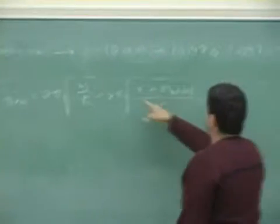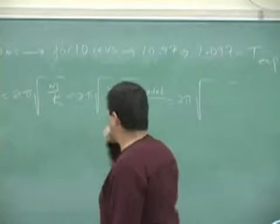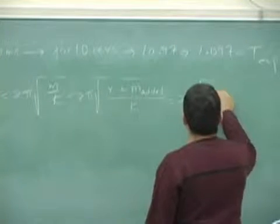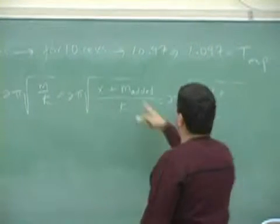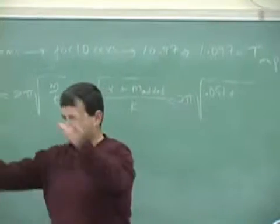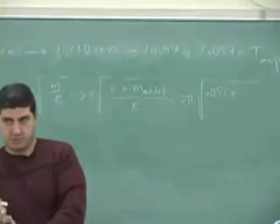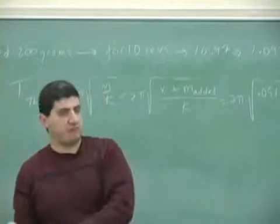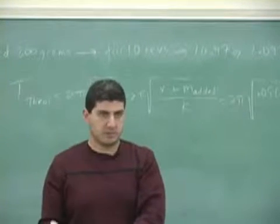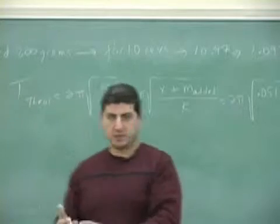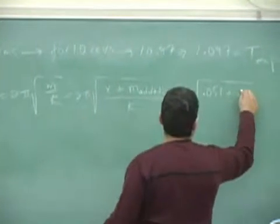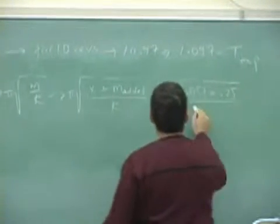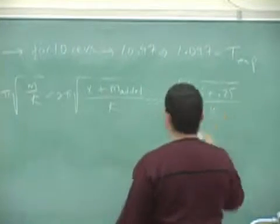So the effective mass of the x was 0.051. How much added mass do I have? The total, everything. I have the hanger, which is 50 grams. Then I have 200 grams added to that, 250, all right? So 0.25 divided by k, which we assumed is about 10.